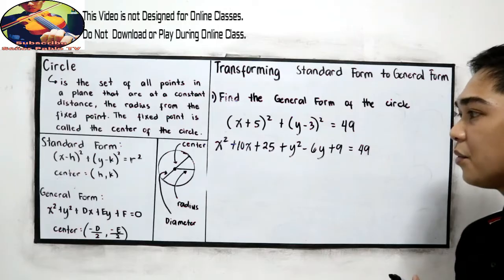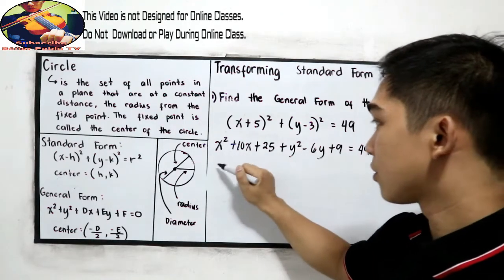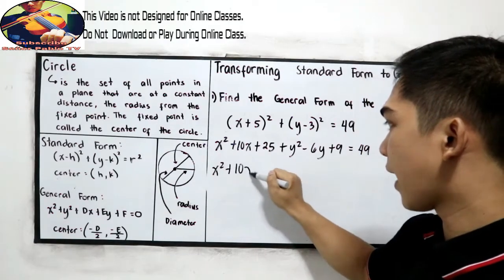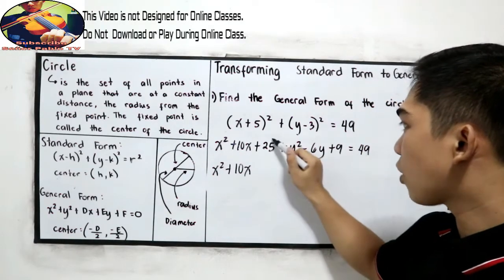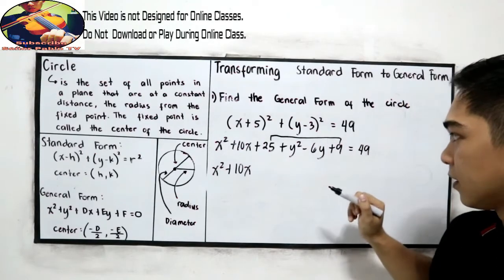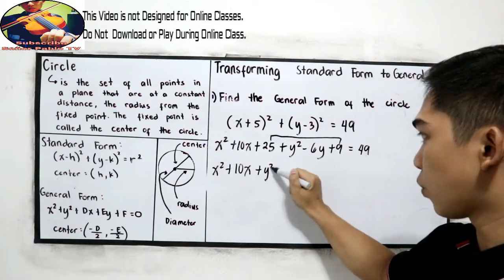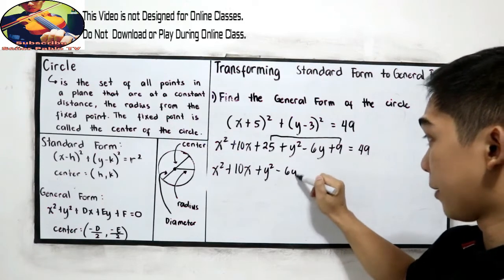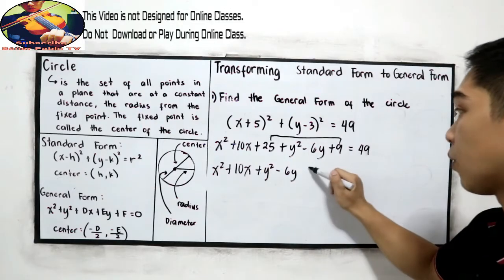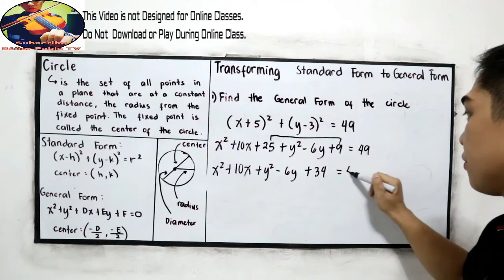And now combine like terms. So x squared plus 10x. We can combine 25 and 9. Let's just copy first: plus y squared minus 6y. So 25 plus 9 gives us 34, is equal to 49.